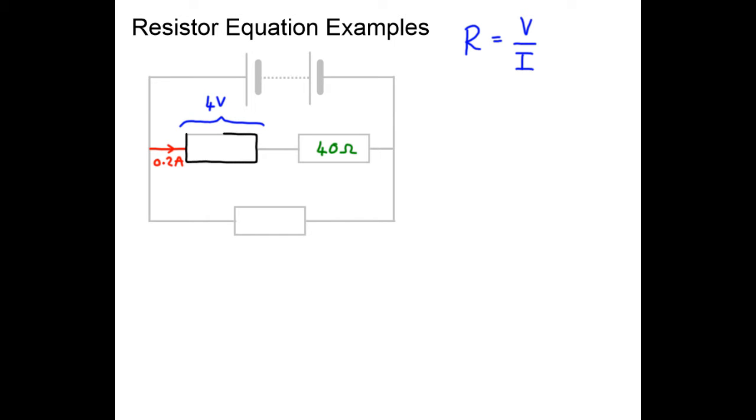So the first component we have is a resistor and the question we're going to ask ourselves is what is the value of this resistor. We know that the voltage, the potential difference, is 4 volts and we know that the current is 0.2 amps through the resistor as shown in the diagram.